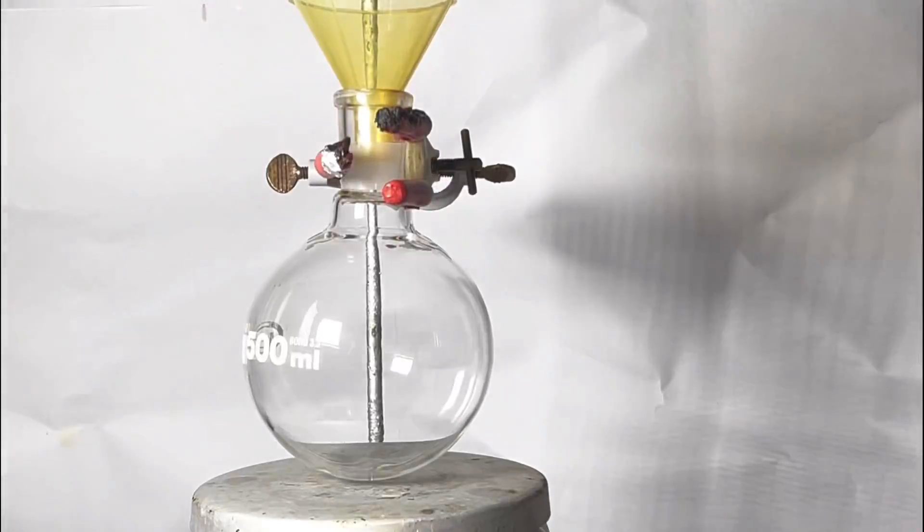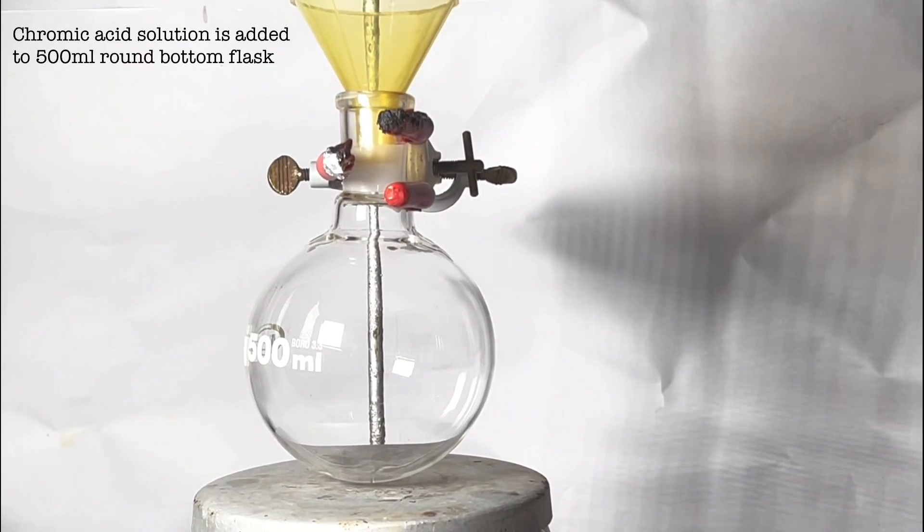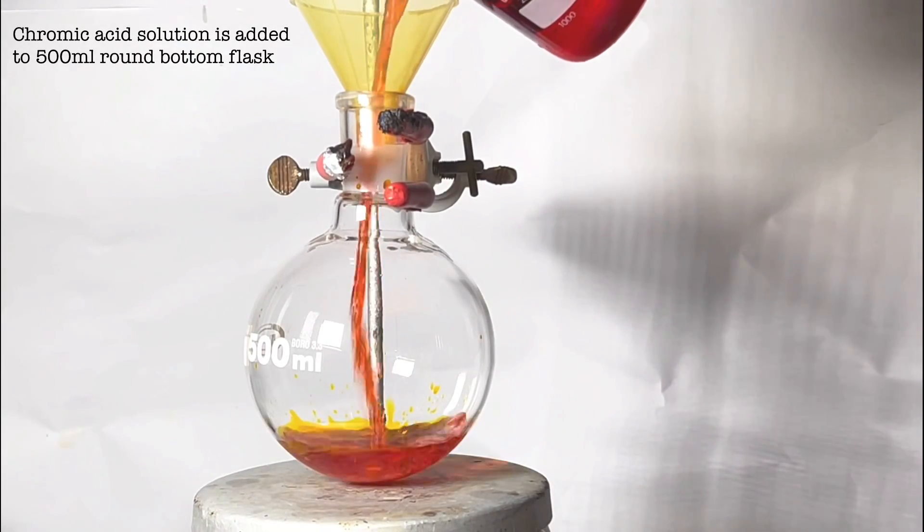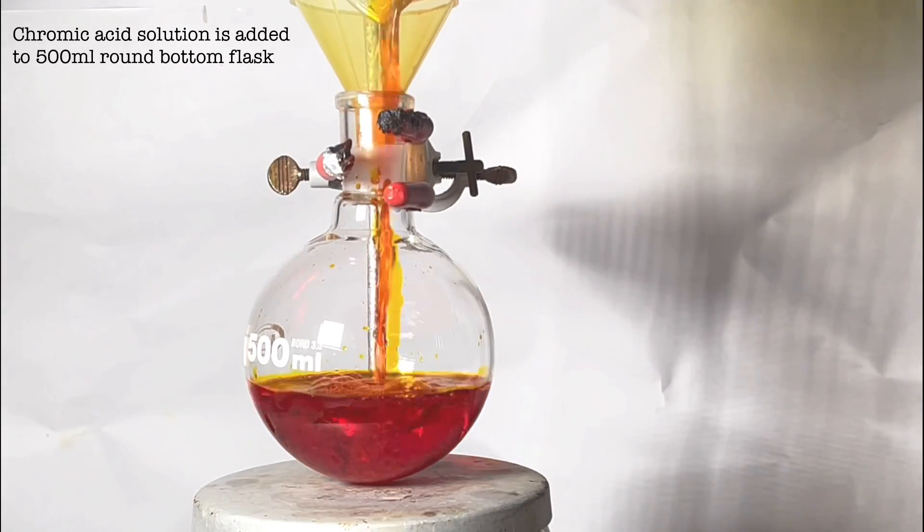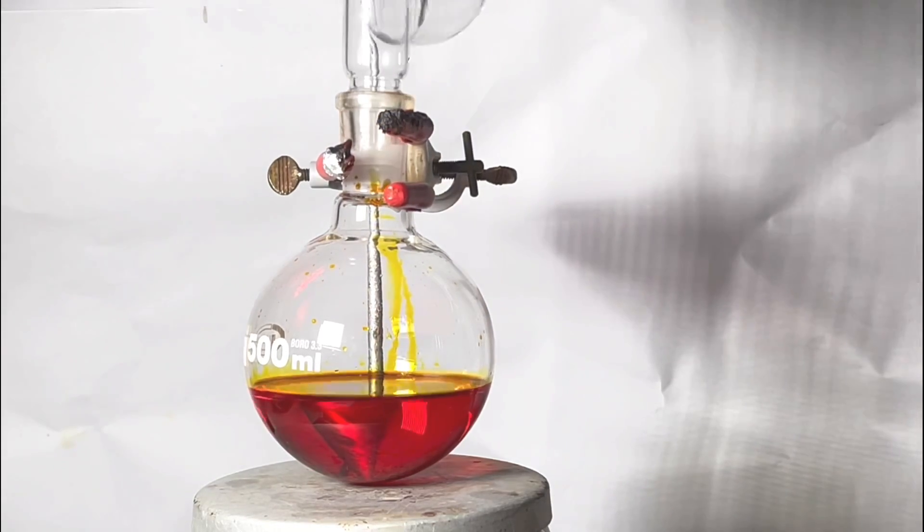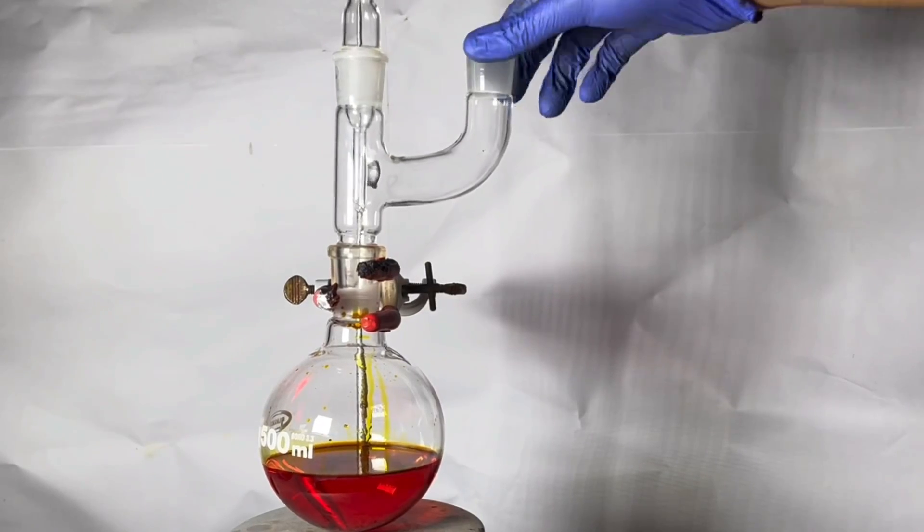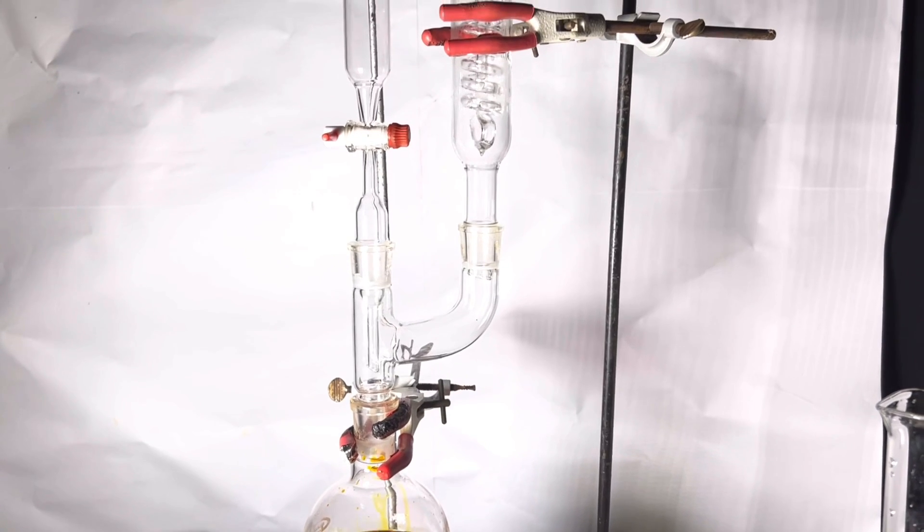Next, a 500 milliliter round bottom flask was fixed on a stand over a hot plate stirrer. The previously made chromic acid solution was added to the round bottom flask using a funnel to prevent spilling. The flask was equipped with a two neck claisen adapter. One of the necks were equipped with an addition funnel and on the other neck a dimroth condenser was attached.